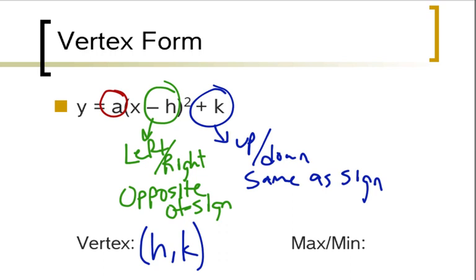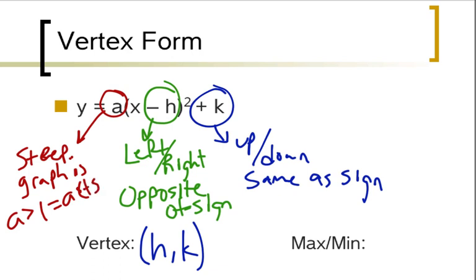And finally the a, the number in front, tells you how steep the graph is. And if the number is bigger than 1, if the a is bigger than 1, it actually acts like slope.